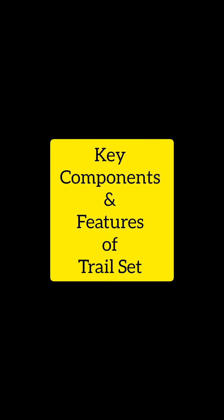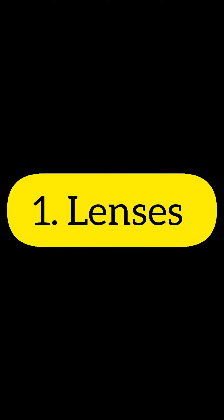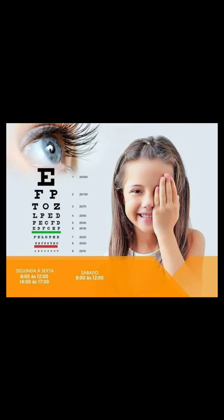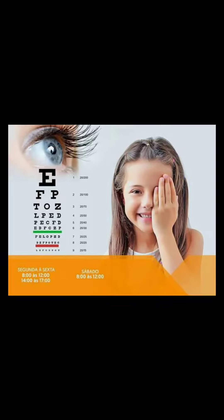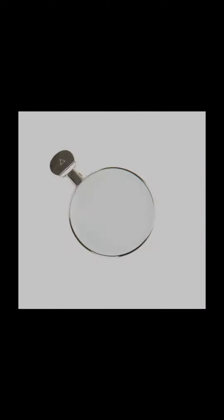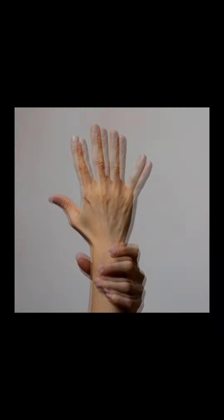Here are some key components and features of the trial set. Number one, the set includes a variety of lenses with different powers and types. Spherical lenses are used to correct myopia, hypermetropia, and presbyopia. Cylindrical lenses are used to correct astigmatism. Prism lenses are used for diagnosing and treating binocular vision disorders. Accessories such as occluder, pinhole, and Maddox rod are included for specific tests.